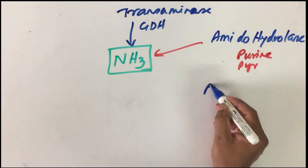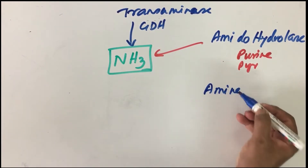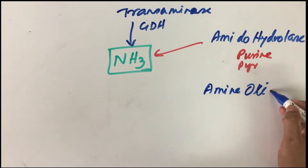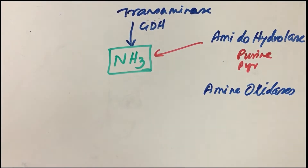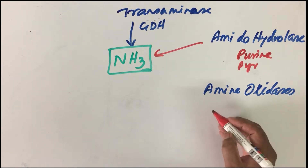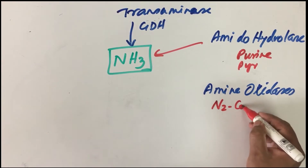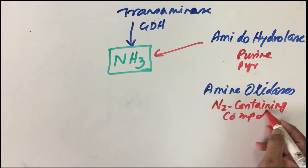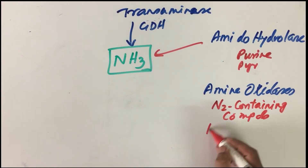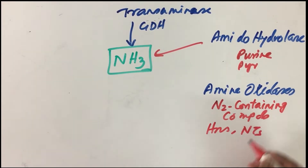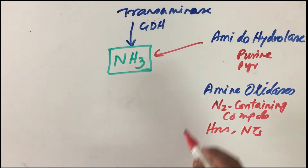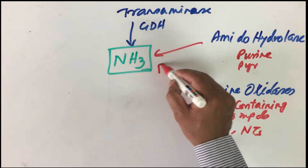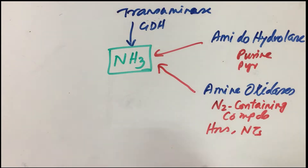Another source of ammonia is amine oxidases. These amine oxidases remove nitrogen from various nitrogen-containing compounds. You know that there are several hormones and neurotransmitters — all of them contain nitrogen. So amine oxidases will also remove ammonia from these substances, making that another source of ammonia.